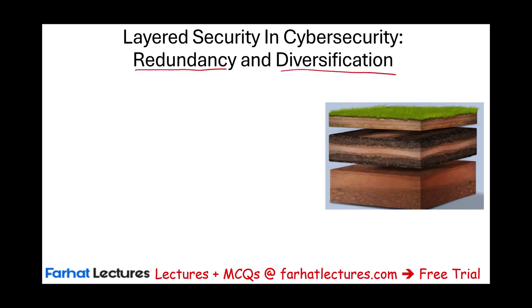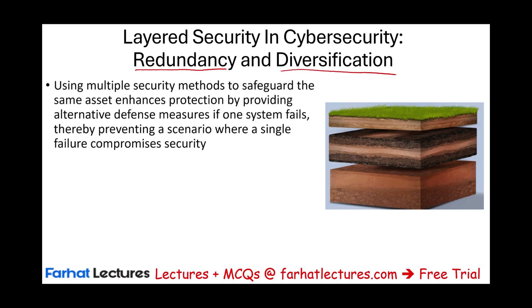The overall idea is the same here — we're going to be more specific on what we mean by redundancy and diversification. The point is to use multiple security methods to safeguard the same asset. We have one asset, and we protect it using multiple methods. Those methods should not be the same; we should have alternative defensive measures. If one system fails and it's the same type of defense, they're going to both fail at the same time. An alternative form of defense prevents a scenario where a single failure compromises security.